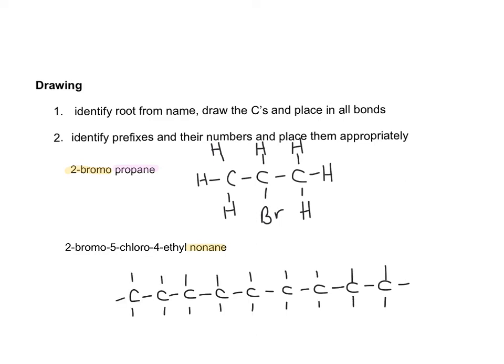Then I pick a side to be my 1 carbon. I always usually pick left to right. So on my second carbon, we have a bromine group. So we're just going to put a bromine, doesn't matter if you put it on the top or the bottom. On carbon number 5, I've got a chlorine atom. So going from the same direction, this is where my chlorine goes.